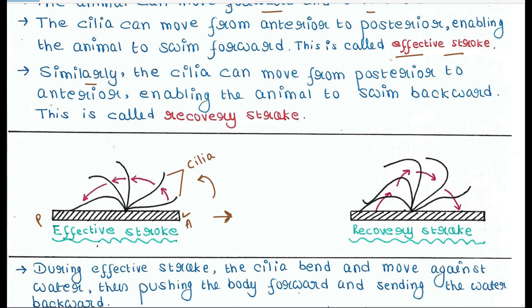Similarly, the cilia can move from posterior to anterior, enabling the animal to swing backward. This is called the recovery stroke. Here the opposite happens — the cilia move in this direction, from posterior to anterior, enabling the animal to swing in the backward direction. This is called the recovery stroke.